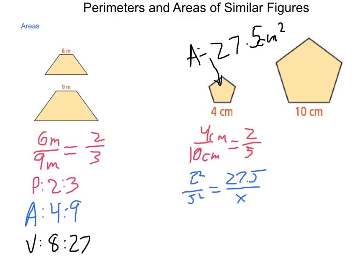So 2 squared is 4, so we have 4 times x is equal to 5 squared is 25, and 25 times 27.5 is 687.5. Now, using our division property of equality, dividing both sides by 4, solving for x, gives us an end area of the larger figure of 171 and 875 thousandths centimeters squared.